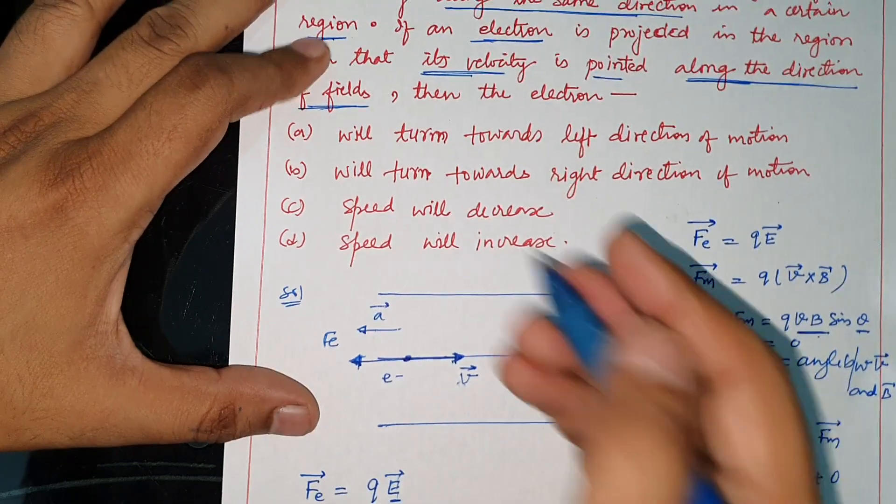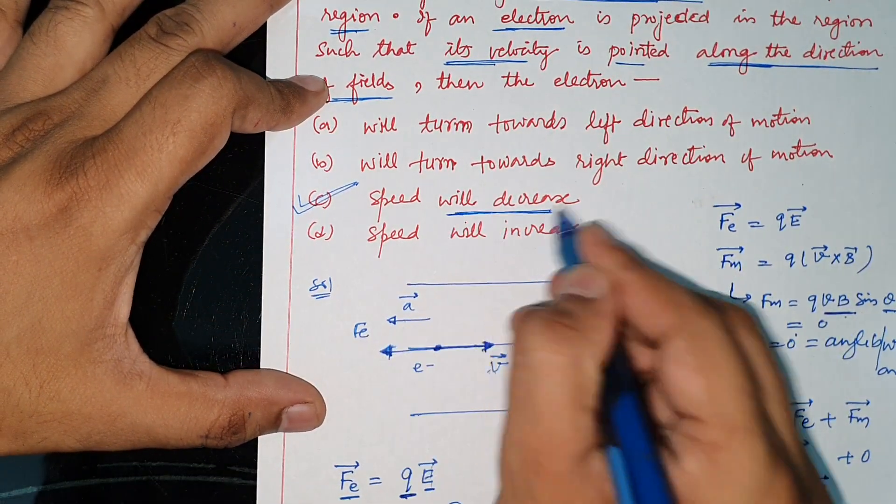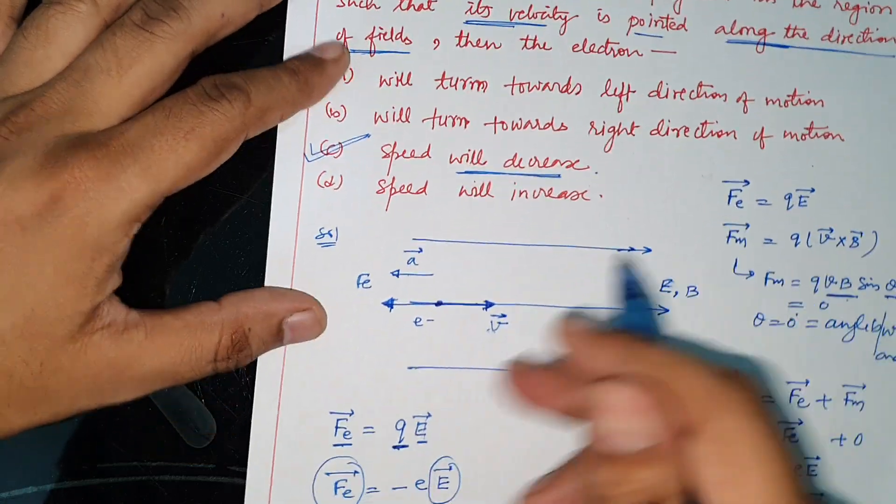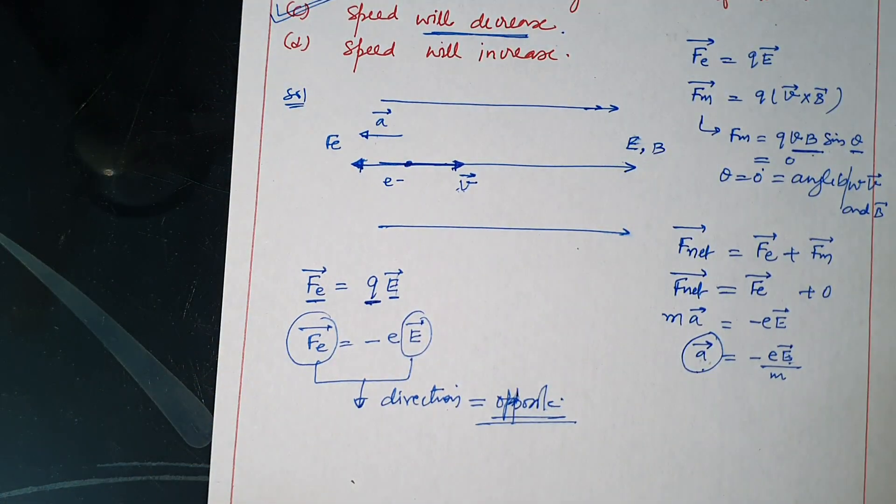Here, speed will decrease and the electron will not turn because there is only one force acting. I hope that you will learn from this. Thank you.